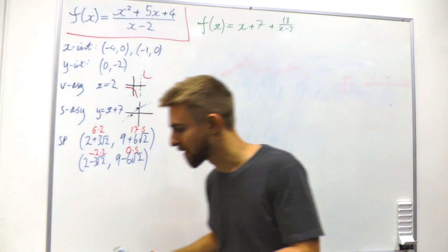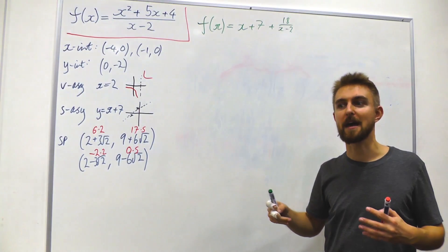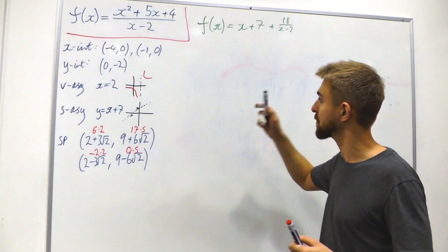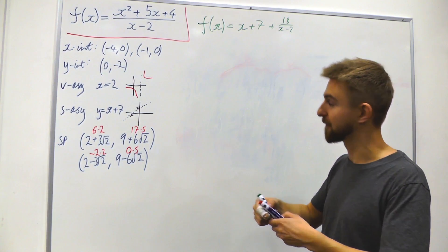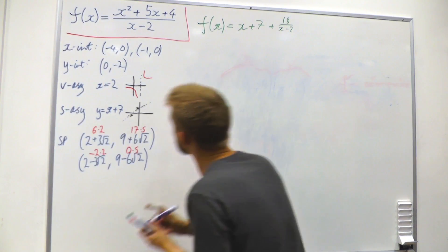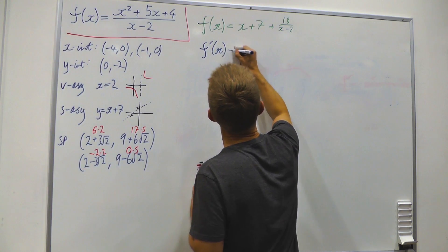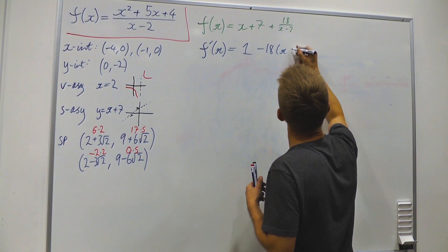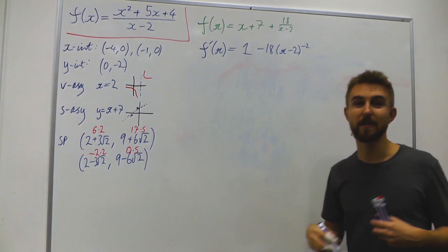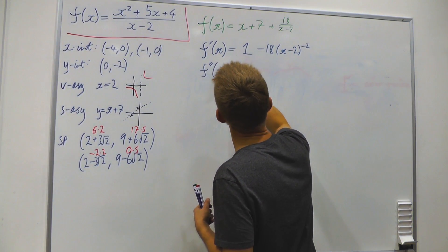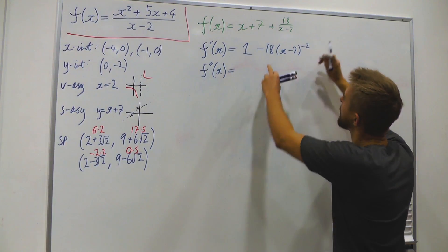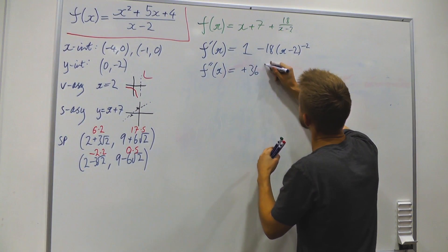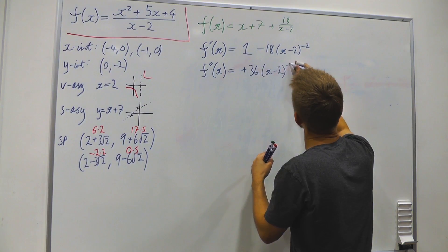We now need to determine whether these stationary points are maxima, minima, or inflections, by computing the second derivative. From f′(x) = 1 − 18(x − 2)^{−2}, differentiating again gives f″(x) = 36(x − 2)^{−3}.